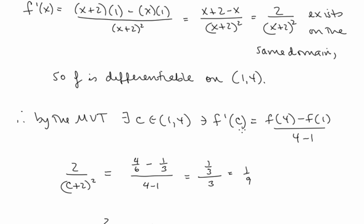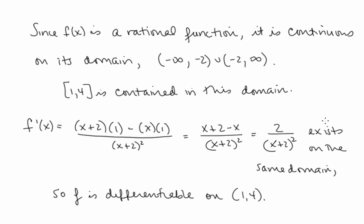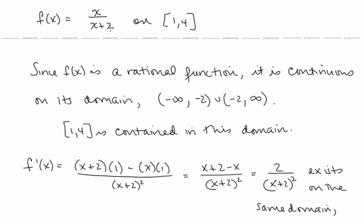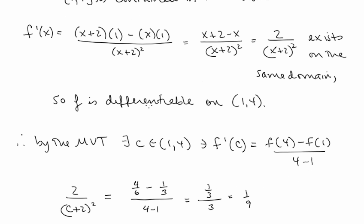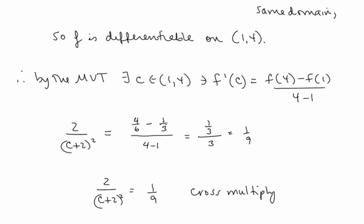If we want to find this c value, we set f'(c) = 2/(c+2)² equal to this secant slope. Plugging 4 and 1 into the original function: f(4) = 4/6 and f(1) = 1/3. So we have (4/6 − 1/3) over (4 − 1), which is (2/3 − 1/3) over 3, giving 1/3 over 3, so that's 1/9. The value of c we're looking for satisfies 2/(c+2)² = 1/9.